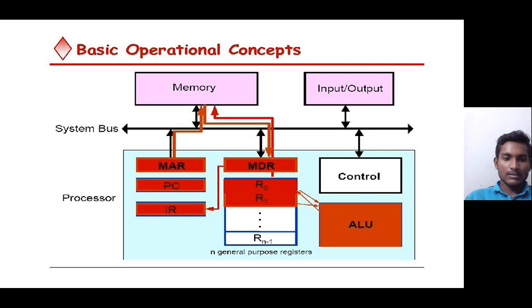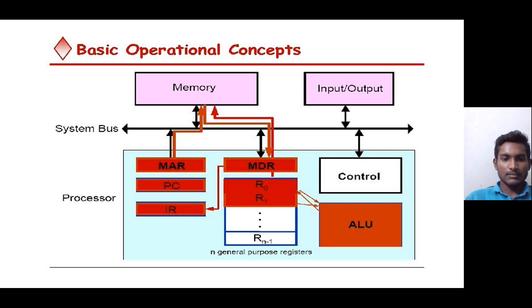Before discussing these registers, the system bus contains three lines: data line, address line, and control line. The main purpose of this bus is to transfer data.